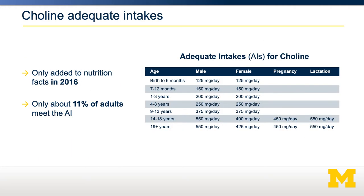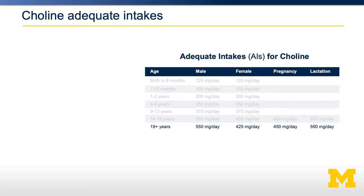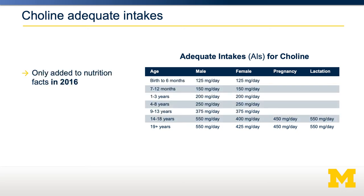The adequate intakes for choline are shown here. For adults, 550mg per day for a man and 425mg per day for a woman. This increases during both pregnancy and lactation. Adequate intakes were only added to nutrition fact labels for choline in 2016.